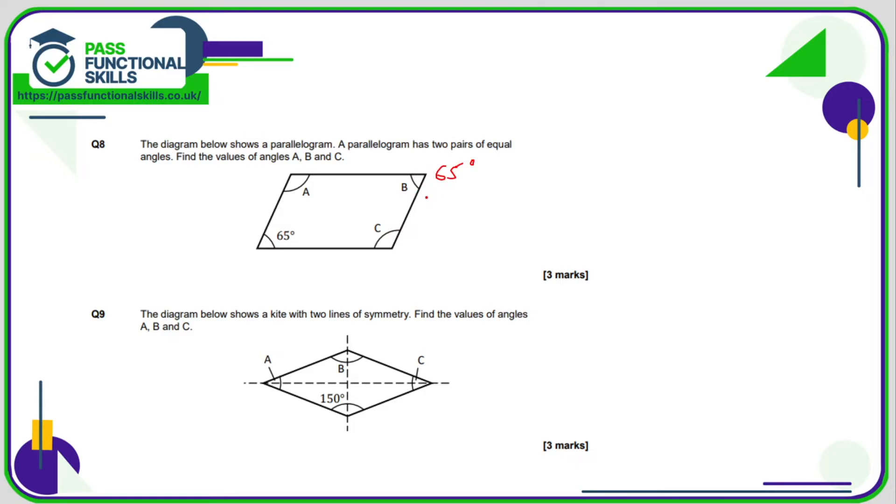The angles which are not diagonally opposite add up to 180. So B and C add up to 180, C and 65 add up to 180, and A and 65 add up to 180. There are many ways to work out A and C. Since B and C add up to 180, taking 65 from 180 leaves 115 degrees. So C is 115 degrees, and A is also 115 degrees because these angles are diagonally opposite.